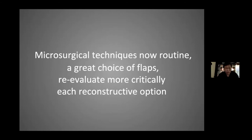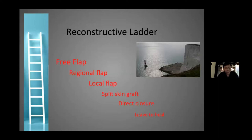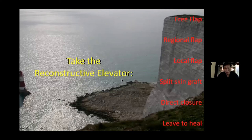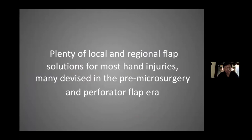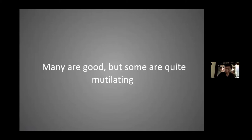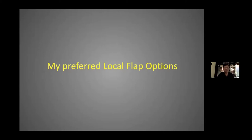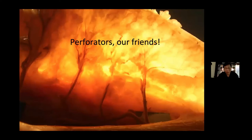Nowadays microsurgical techniques are very routine and we have great choice of flaps, so we need to reevaluate more critically each reconstructive option. Instead of taking the reconstructive ladder we should consider taking the elevator and finding the best option for each problem. There are plenty of local regional flap solutions for most hand injuries nowadays, many from the pre-microsurgery pre-perforator flap era. Many are very good but some are quite mutilating, and it's those that are less mutilating that I'm interested in. I'm going to talk about my preferred local flap options, which centers mostly around perforator flaps.